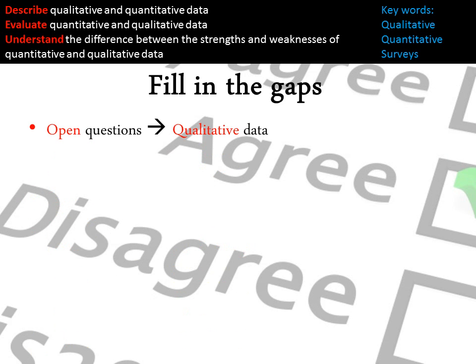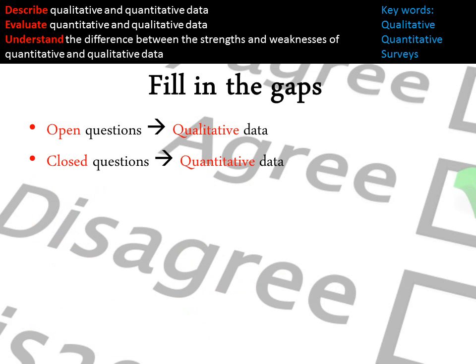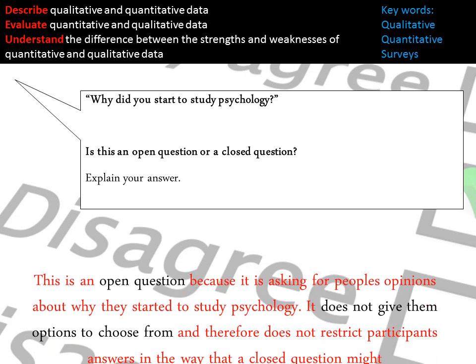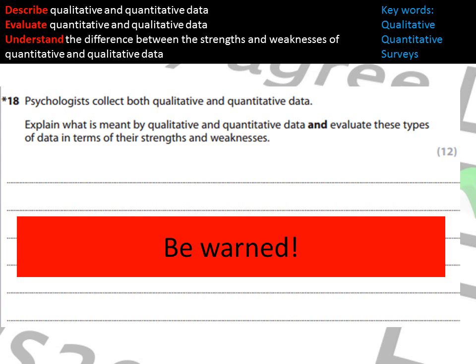It's really important that you remember: open questions will always gain qualitative data and closed questions will always gain quantitative data. For example, the question 'Why did you study psychology?' is obviously an open question because it asks for your opinion — it doesn't restrict your answer, you can answer this in any way you want.